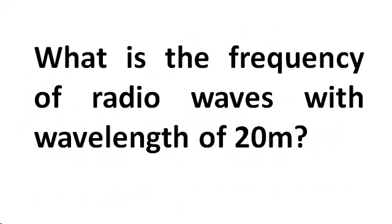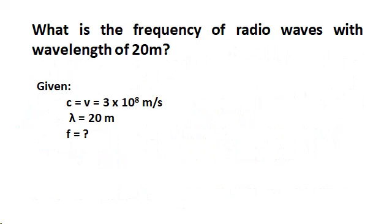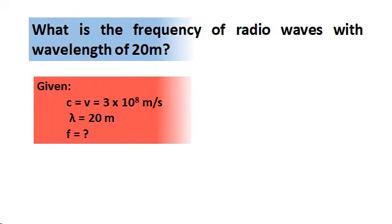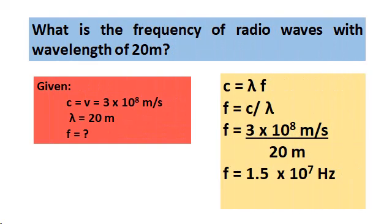Let us have this example. What is the frequency of radio waves with wavelengths of 20 meters? The given quantities are: c = 3 × 10^8 meters per second, and the wavelength is equal to 20 meters. Using the equation v = λf, then the equation for f is equal to c all over the λ. Substitute the given quantities, so we have 3 × 10^8 meters per second all over 20 meters. The frequency of radio waves is equal to 1.5 × 10^7 hertz.